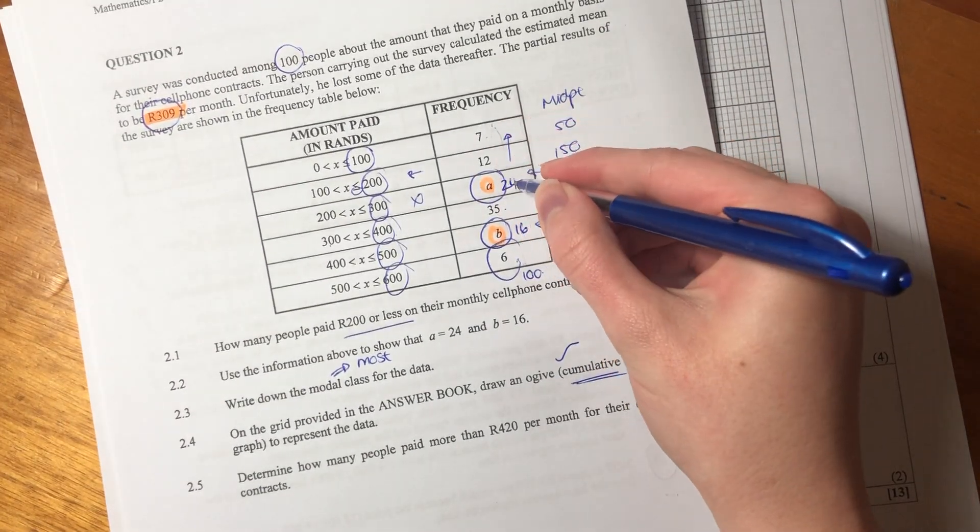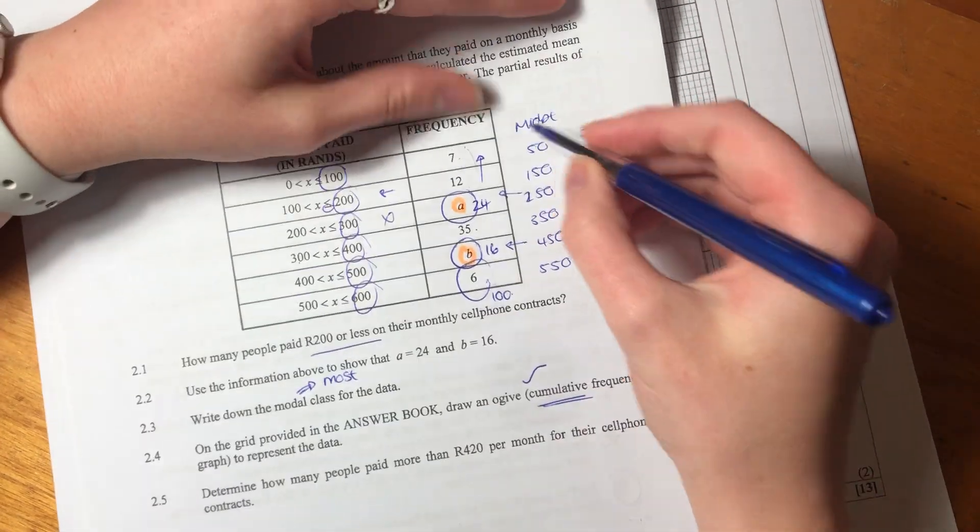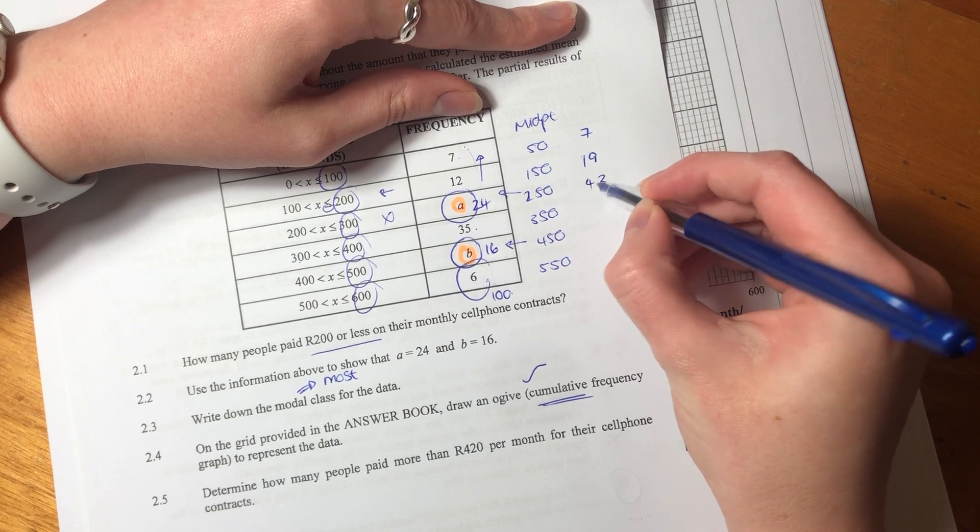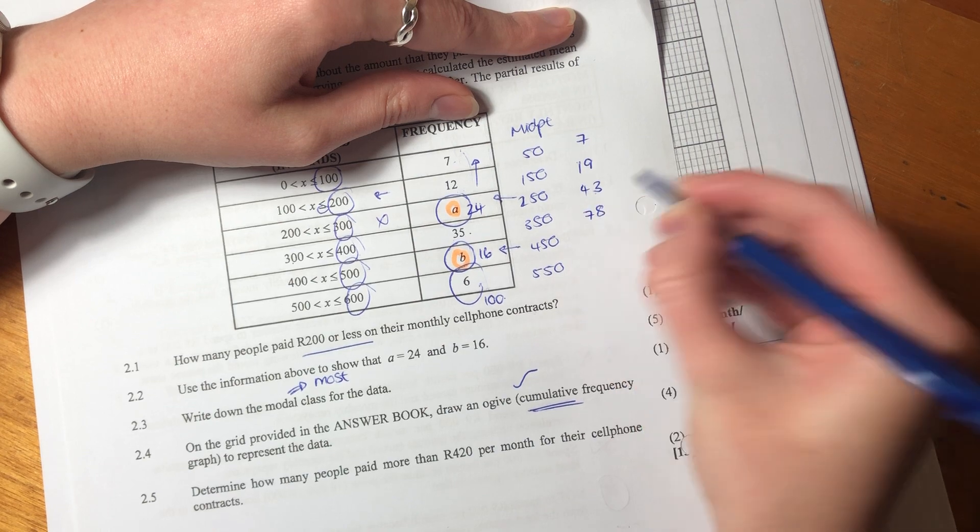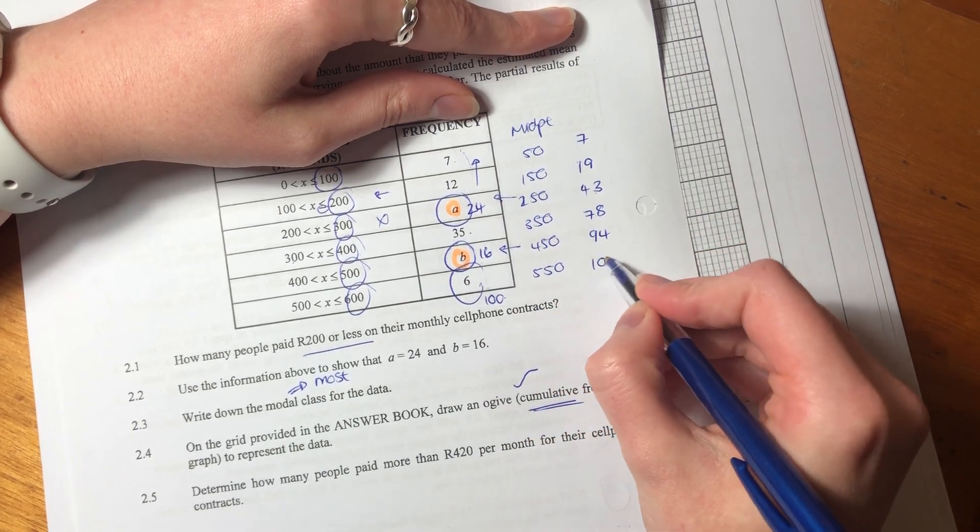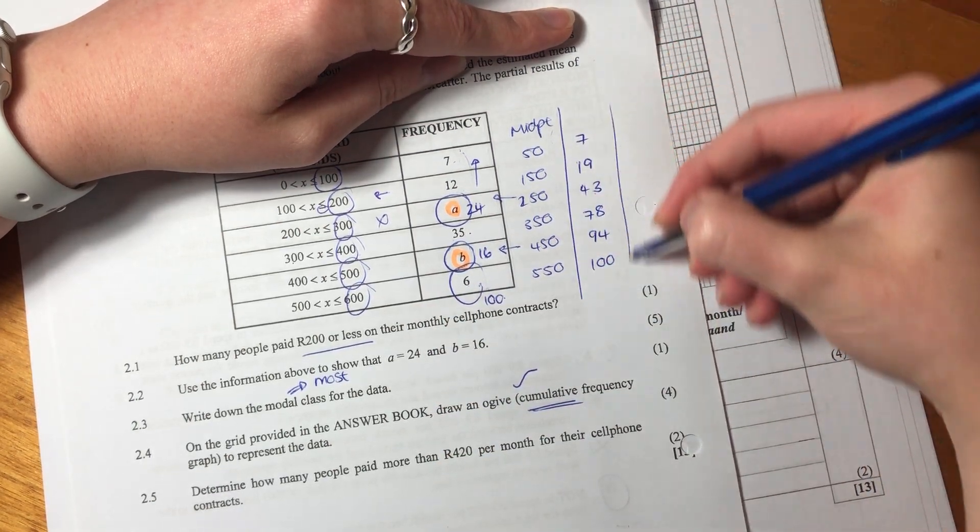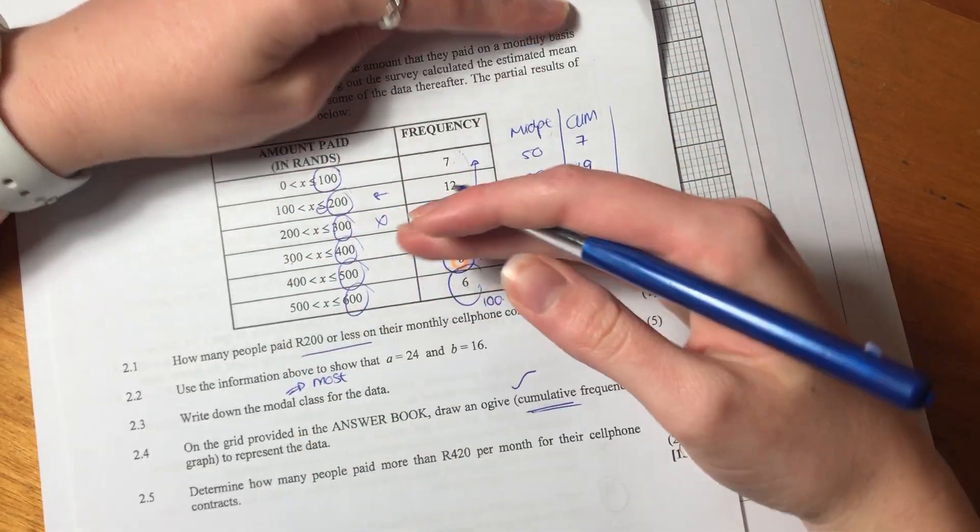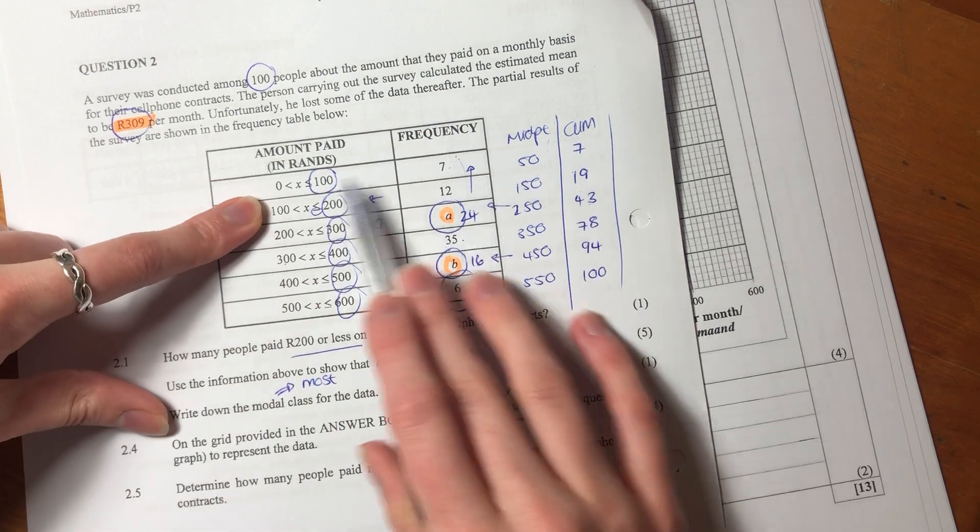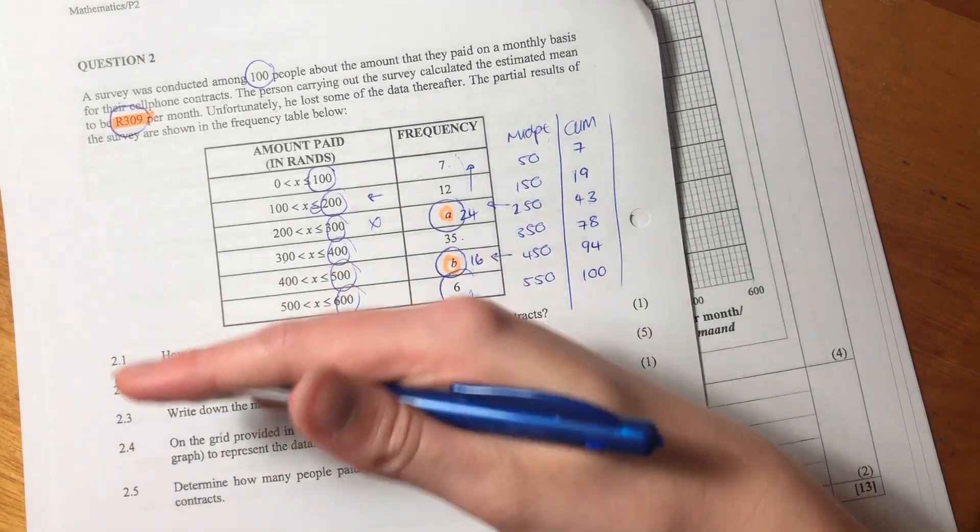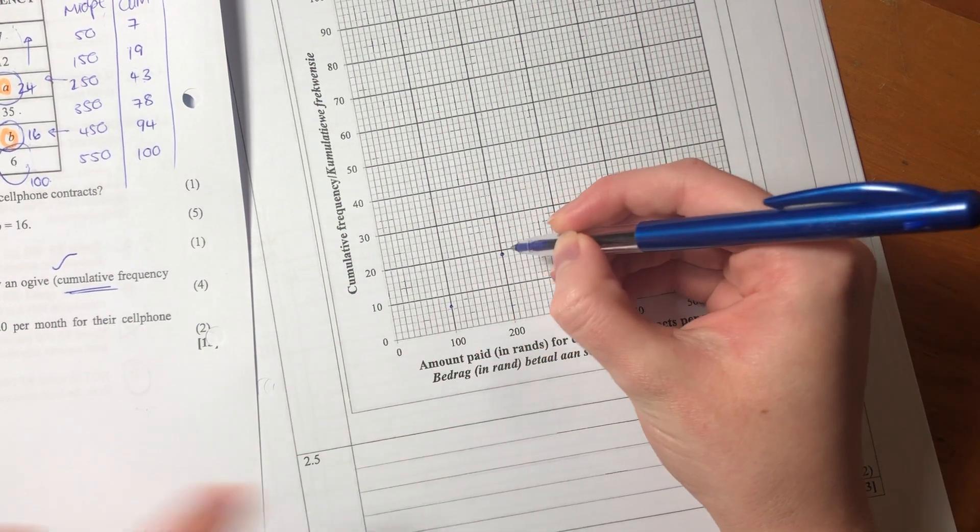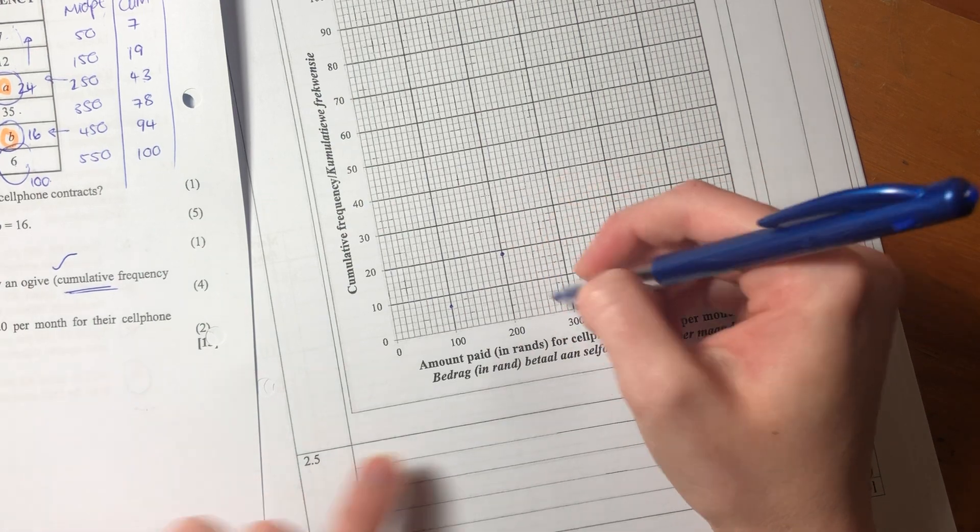At 100, it is 7. At 200, we are sitting at - now this is important - it is cumulative. You can't just go 7, 12, 24, 35, 16, 6. You have to go like this: 7, then what is 12 plus 7? It is 19. Then what is 24 plus 19? 43. What is 35 plus 43? 78. What is 16 plus 78? 94. What is 6 plus 94? 100. Because it is cumulative, we are accounting for frequencies as we go up. Here it's saying, what is between 0 and 100? Here it's saying, how many people are actually between 0 and 200? Here it's between 0 and 300. They're adding to each other, it's like layers.